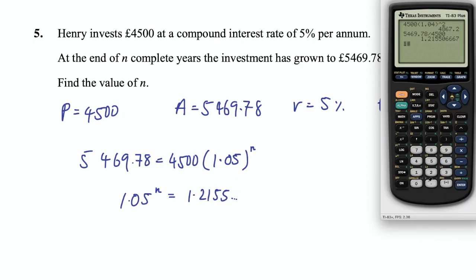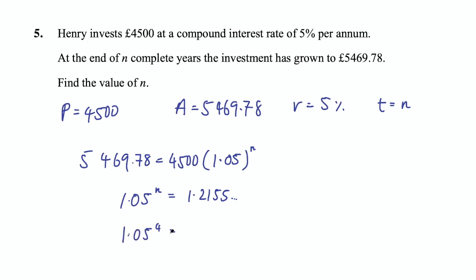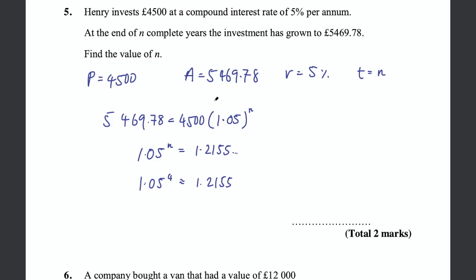Get your calculator out and try some values. 1.05 squared gives 1.1025 — clearly not enough. Trying cubed gives 1.157 — still not quite 1.2. Trying 1.05 to the power of 4 gives 1.2155. Let's check that 1.05 to the power of 5 is clearly too big, so we go with 4. Therefore 1.05 to the power of 4 is approximately 1.2155, and the final answer is 4 years.